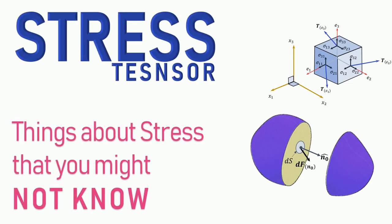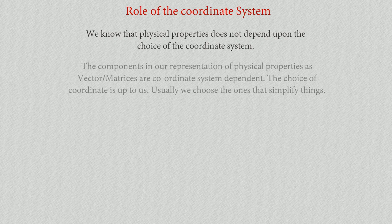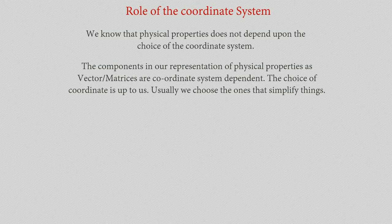The physical property doesn't depend upon the choice of the coordinate system — we have said this several times. The components in our representation of physical properties as vectors or matrices are coordinate-dependent. The choice of coordinate system is up to us; usually we choose the coordinate system that will help simplify things and ease calculations.